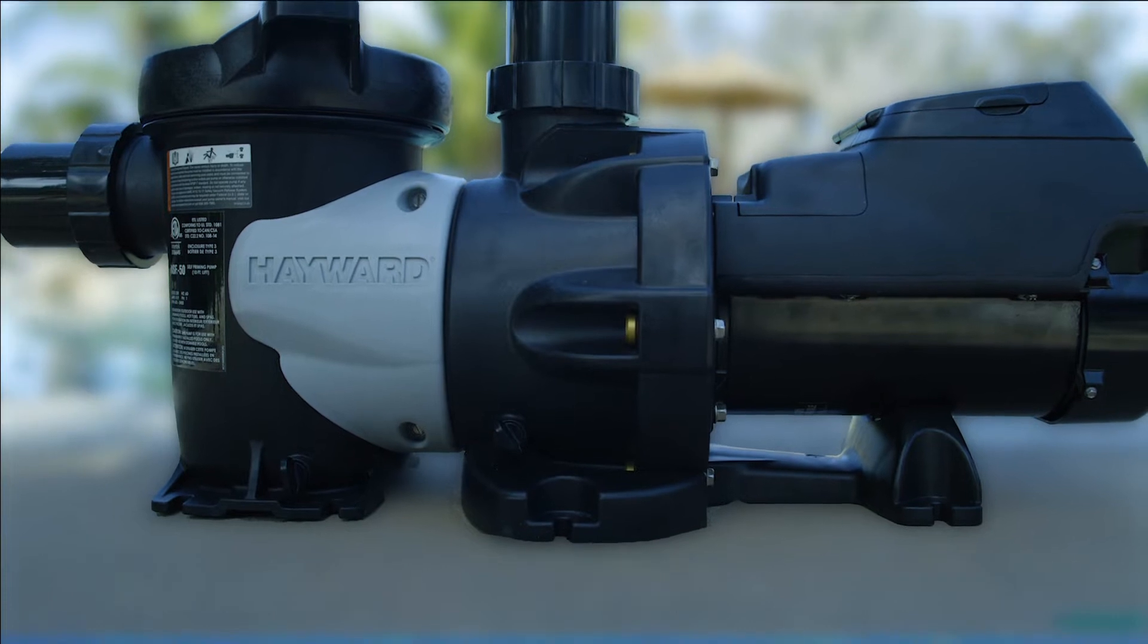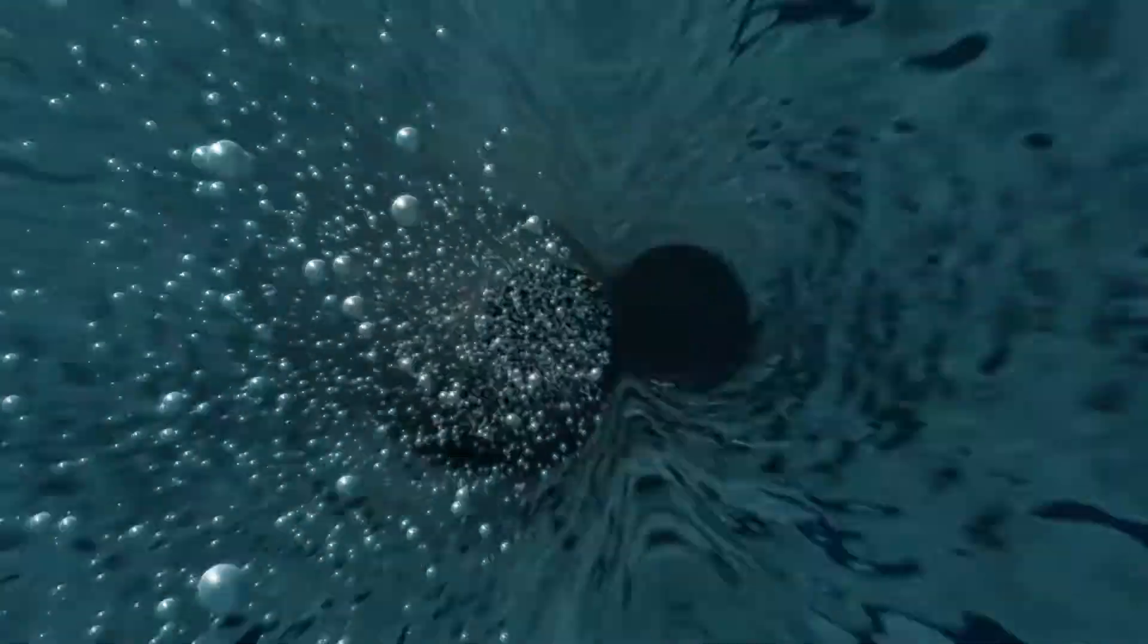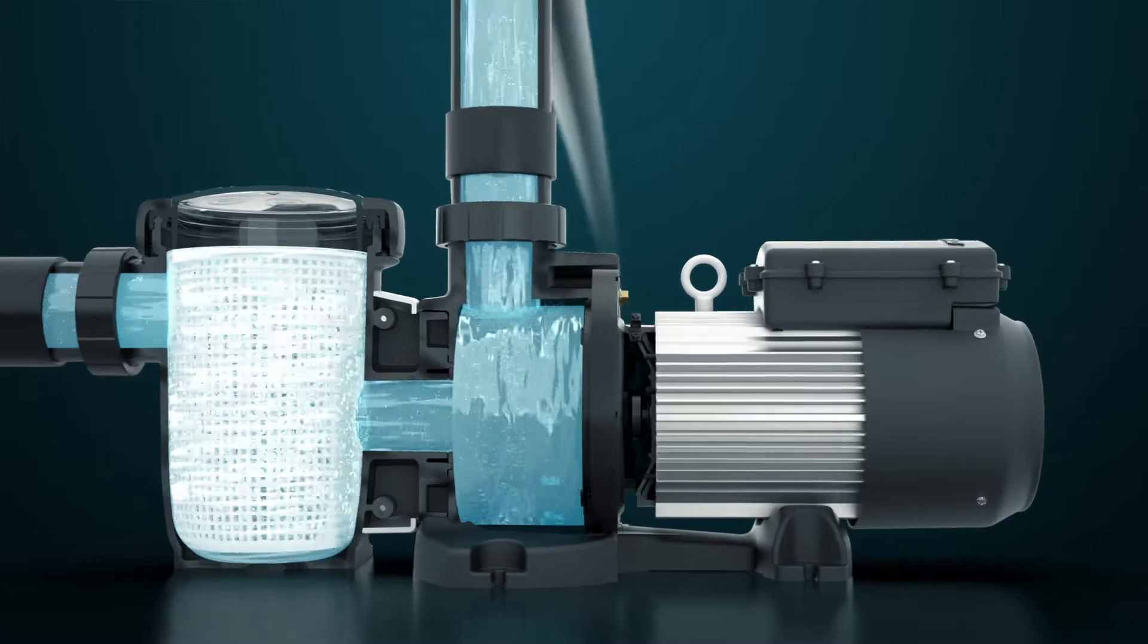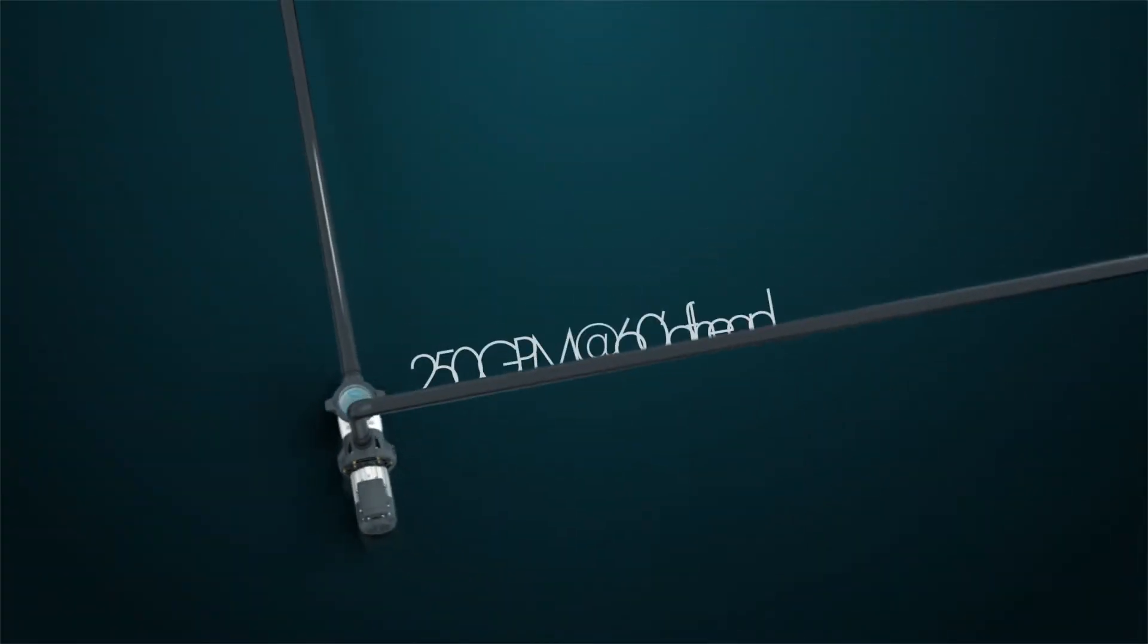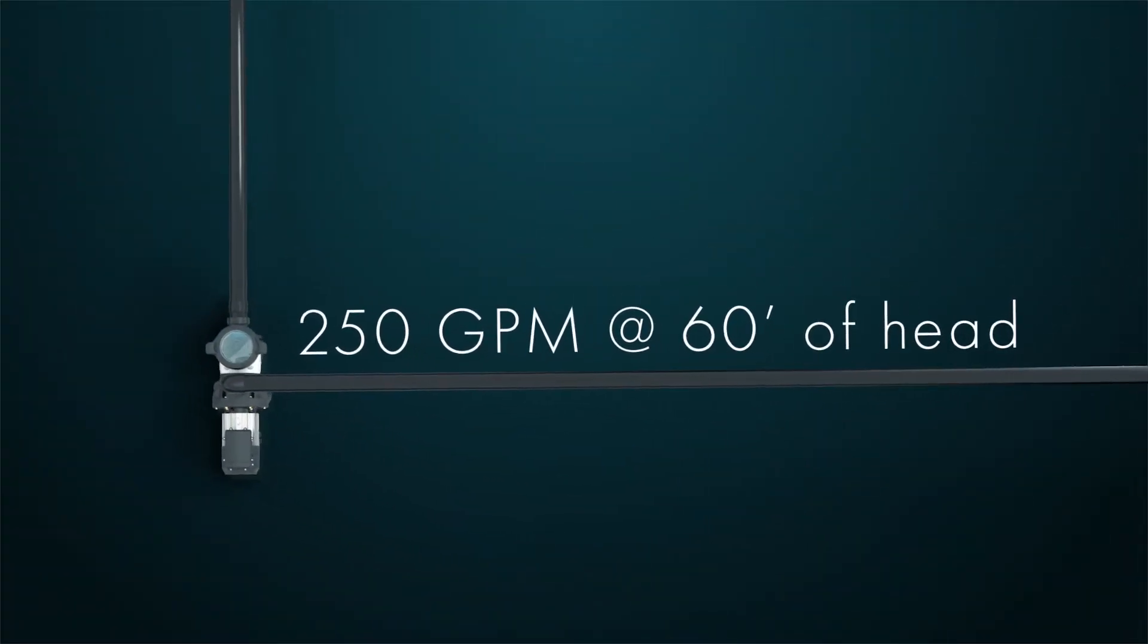Meet the HCP-3000 series. With 3-inch unions and 250 GPM at 60 feet of head with the 7HP model, this pump is the most powerful in its class.